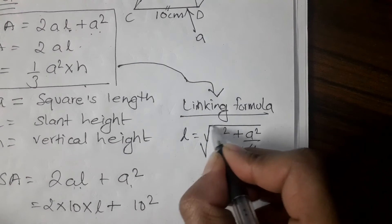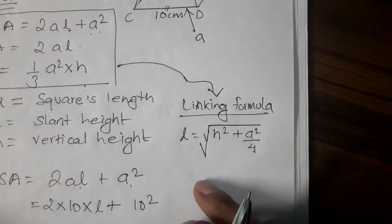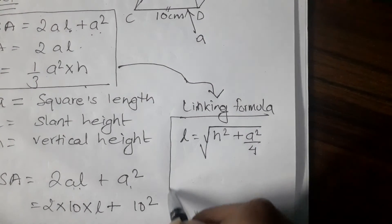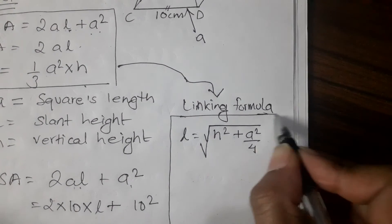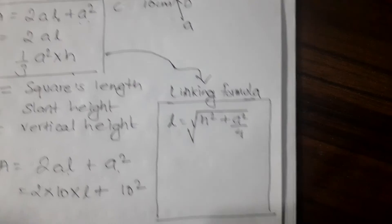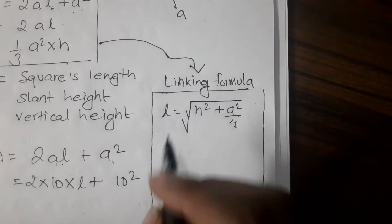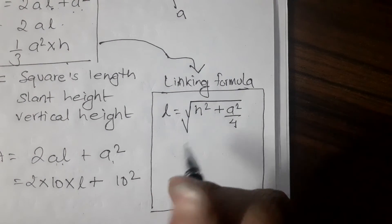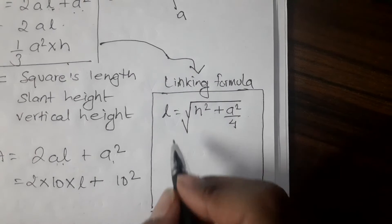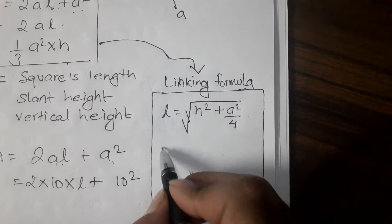L equals the square root of h squared plus a squared by 4. This is what we need to do. That is how we derive and use this formula directly.